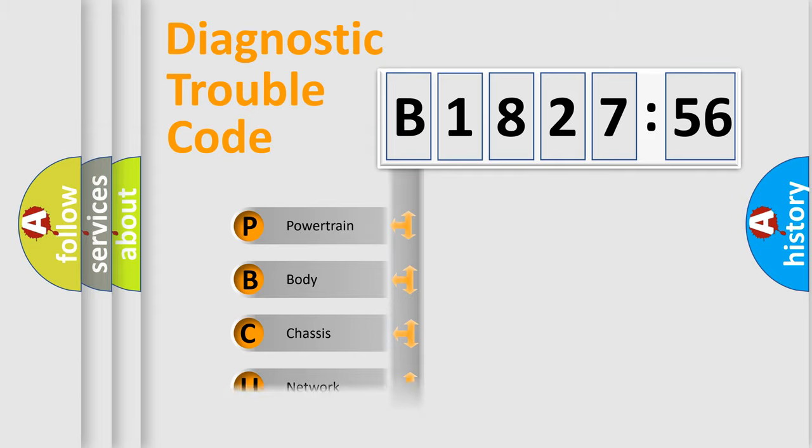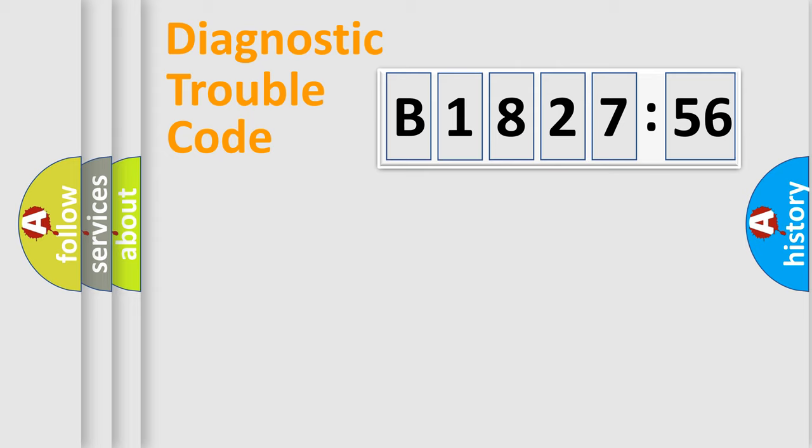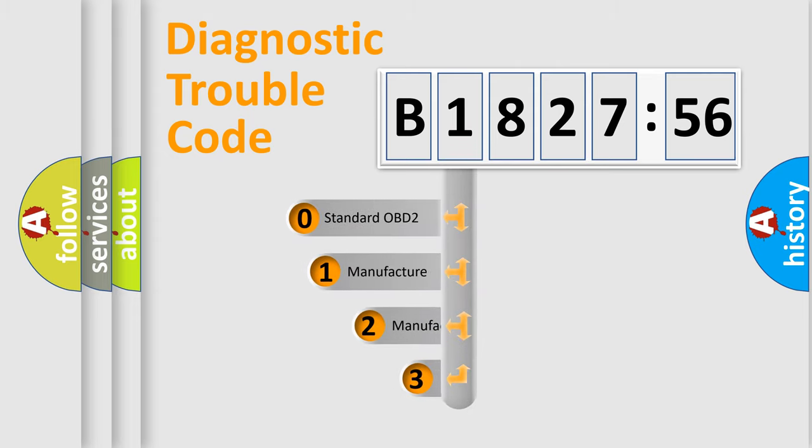We divide the electric system of automobile into four basic units: Powertrain, Body, Chassis, and Network.